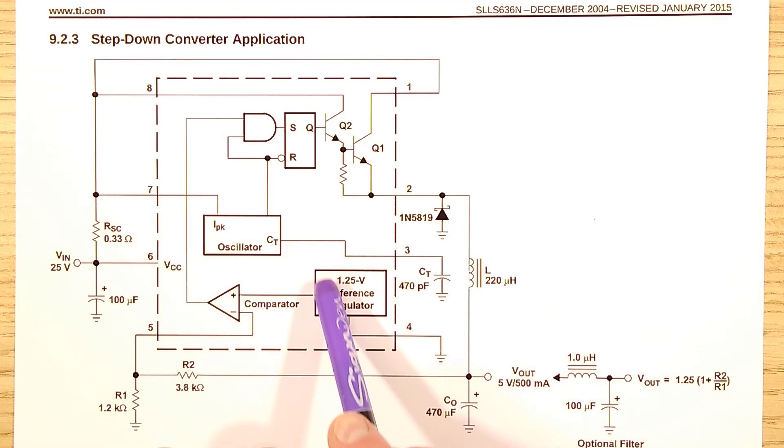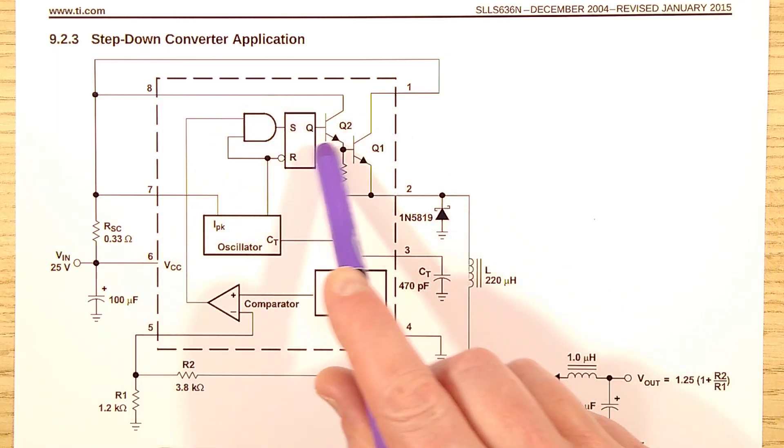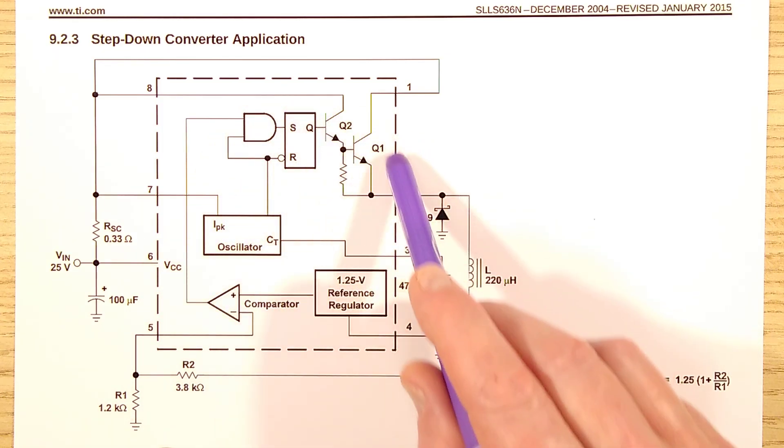So here is the 1.25 volt reference and it provides that to the op amp, the comparator on this instance which compares it to the voltage being measured by the potential divider across the output capacitor. And when that reaches the 1.25 volts, output of this changes state and toggles this output driver on and off.